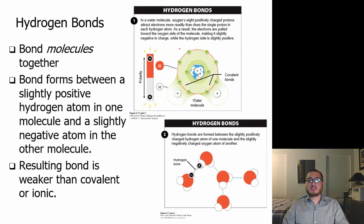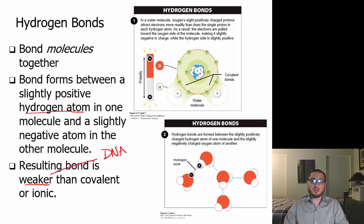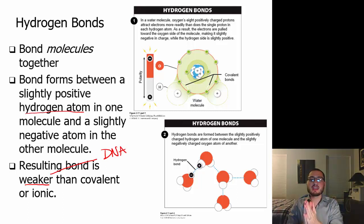Hydrogen bonds are also very important, especially when we talk about humans, genetics, and DNA. They bond molecules together, forming between slightly positive hydrogen atoms in one molecule and a slightly negative atom in other molecules. The resulting bond is weaker than covalent or ionic bonds. This is important when we want to easily break these bonds — in DNA, we want a weak bond so we can break it, make copies, and then put it back together very easily. That's where hydrogen bonds are very useful.